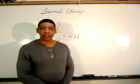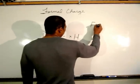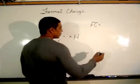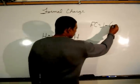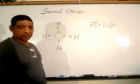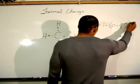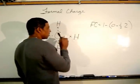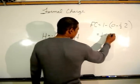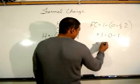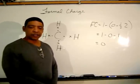Now let's determine the formal charge for each hydrogen in this compound. Hydrogen possesses one valence electron, and in this particular case there are zero non-bonding electrons and there are two bonding electrons for each hydrogen. So for hydrogen, the formal charge will be equal to one minus zero minus one, which is equal to zero. So in this molecule, the formal charges of both carbon and hydrogen will be zero.